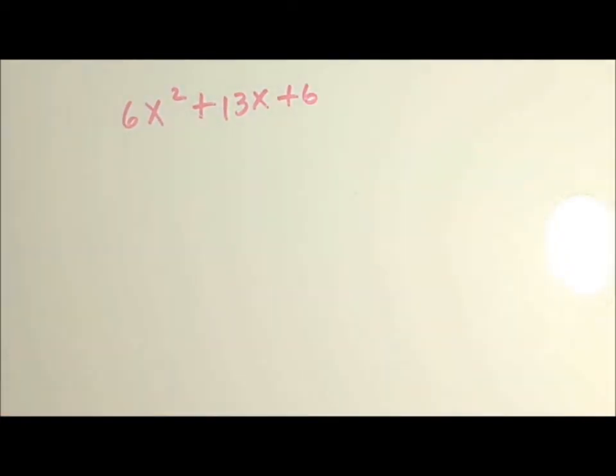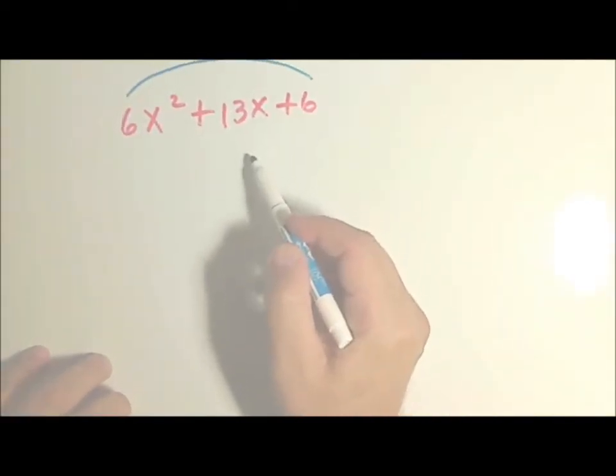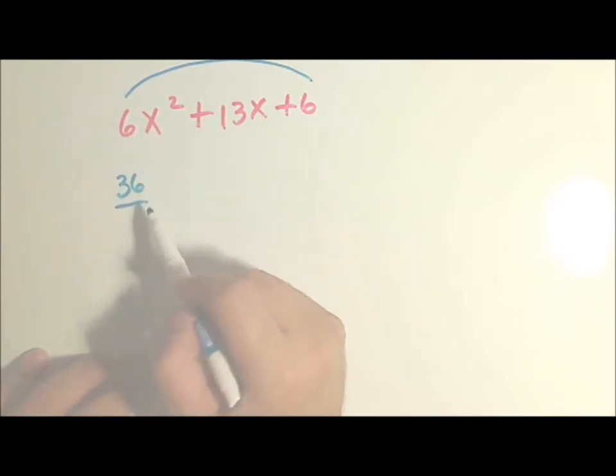So the first thing we're going to do is multiply the two ends of the trinomial. 6 times 6 is 36. So we're dealing with a positive 36, because a positive times a positive is a positive.